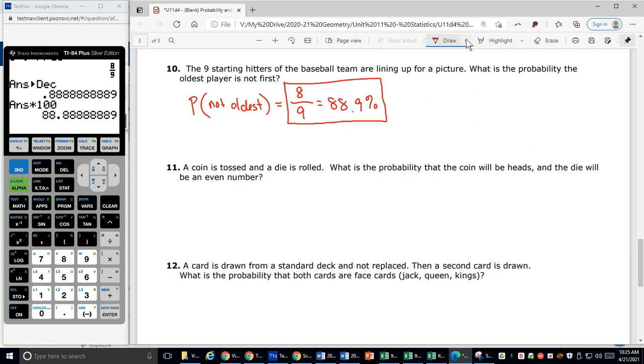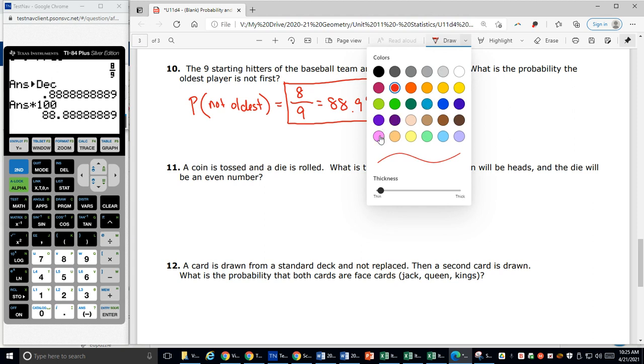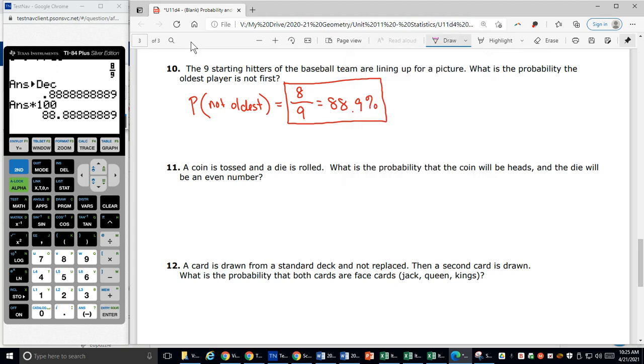All right, number 11. A coin is tossed and a die is rolled. What is the probability that the coin will be heads and the die will be an even number? So probability that I'm going to land heads up and an even number. The probability on a coin that it will land up on heads, there's one heads on every coin, there are two sides to every coin.